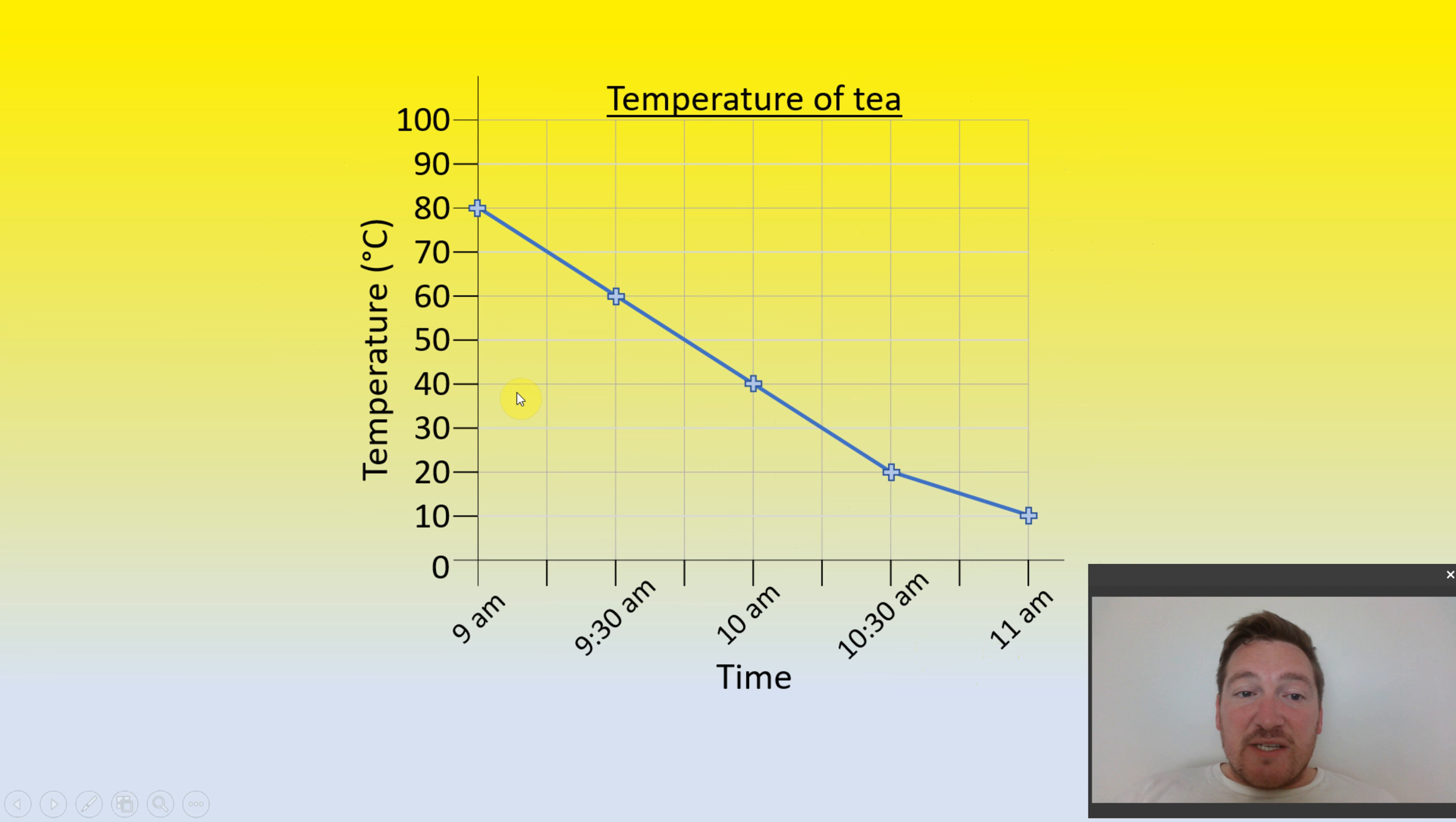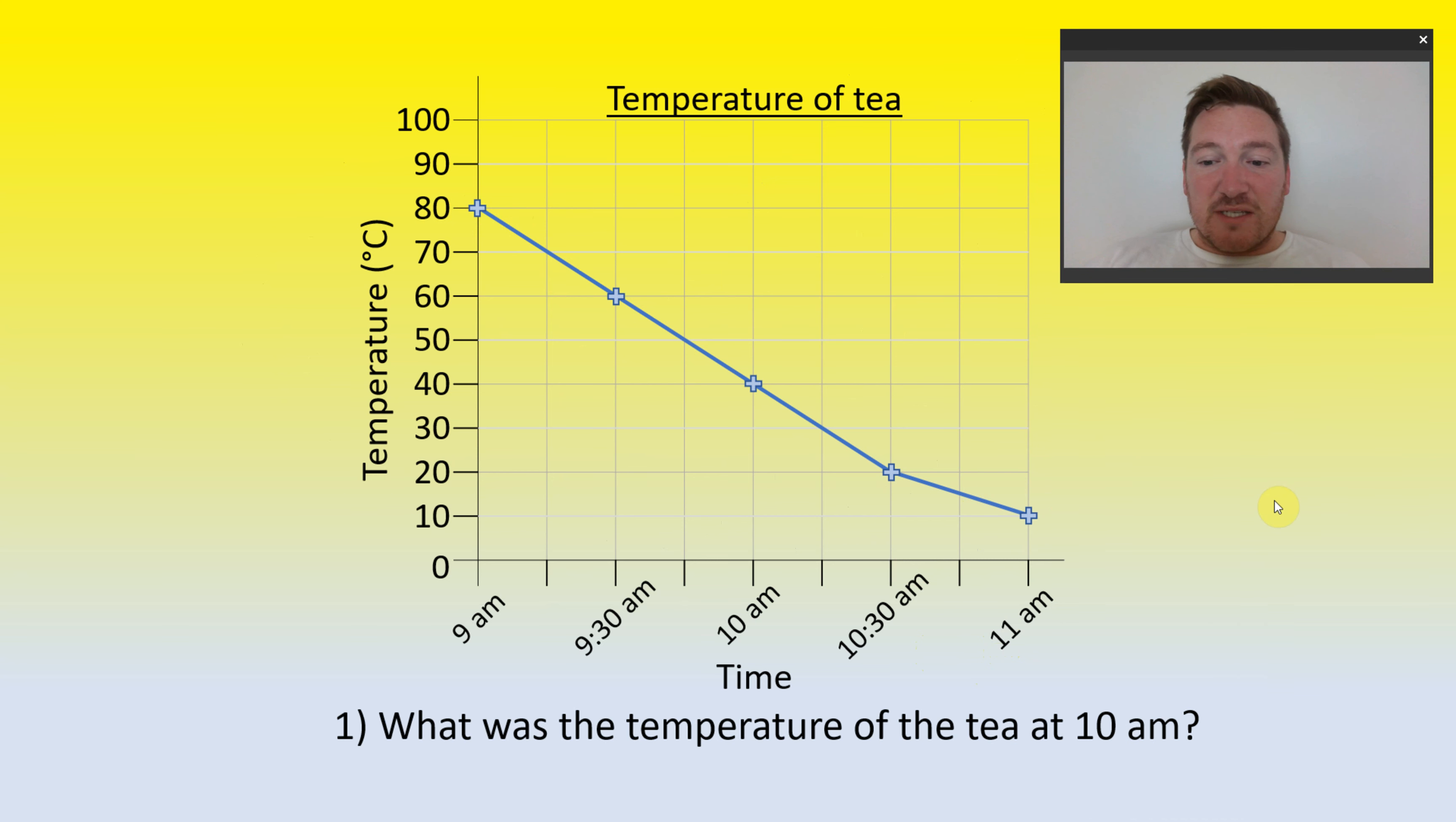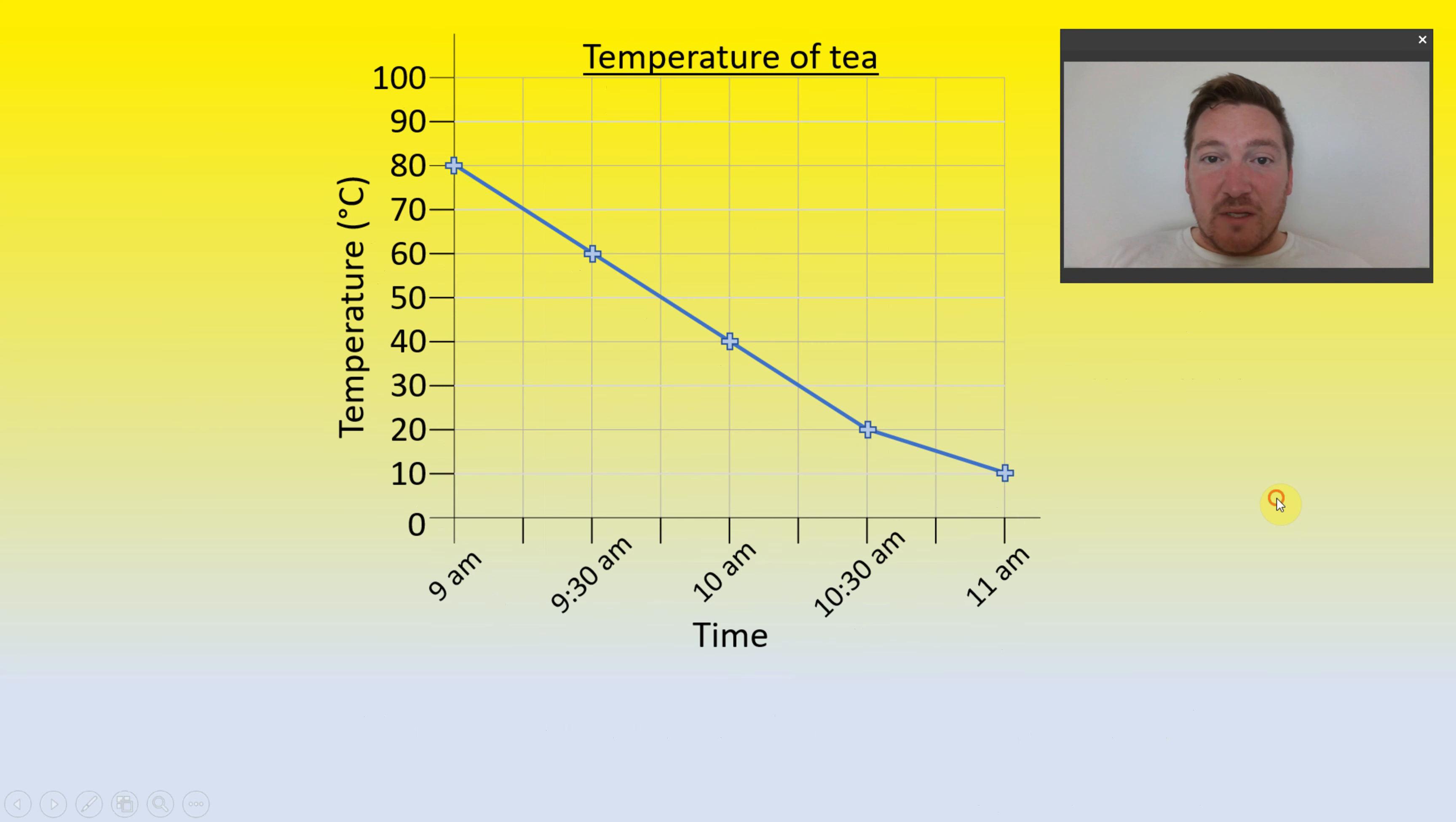So we've got temperature of tea here, looking at the start of the morning 9am up until 11am and see how the temperature decreases. So first question, what was the temperature of the tea at 10am? If you put 40 degrees you'd be correct. Next question, what was the time when the tea was 20 degrees? So if you found 20 degrees, track down and put 10:30 am, you would be correct. Well done.